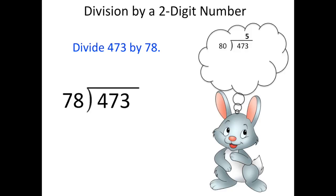Well, 8 goes into 47 five times, except we're really looking at 473. So we put it above the 3. So 80 goes into 473 five times, so we're going to start with 5 in the quotient. 78 goes into 473 five times. Now we're going to multiply, and we get 390, which we'll write in and then subtract.